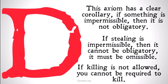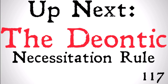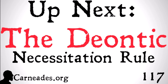Hopefully this is a very intuitive axiom of Deontic logic. It's kind of one of the bedrocks of how we think of Deontic logic and how we define the different concepts of obligation, impermissibility, and so on. Up next, we're going to be looking at the third axiom for our standard Deontic logic, known as the Deontic Necessitation Rule. Watch this video and more at Carneades.org — a new video every single day for these last three months of the year. Stay skeptical, everybody.